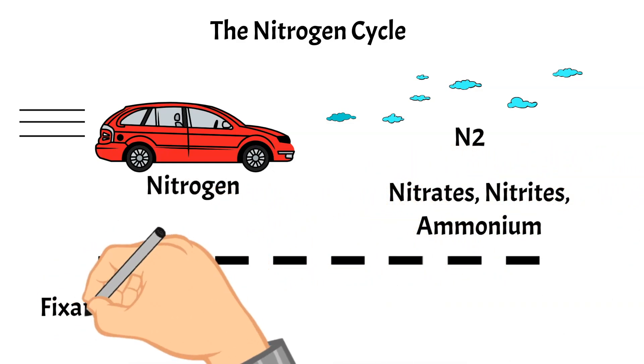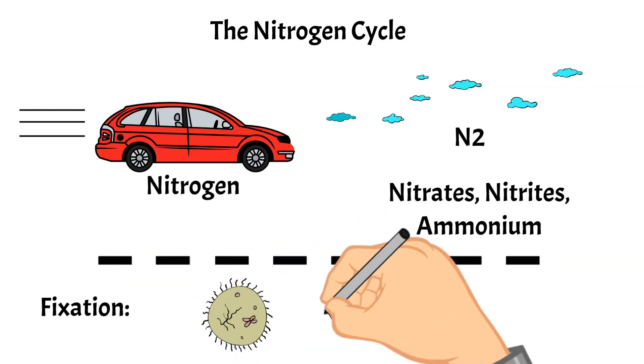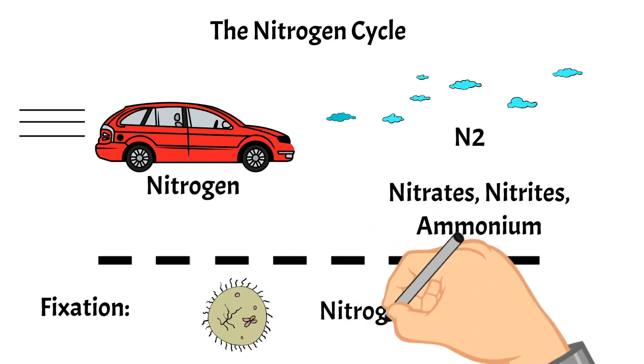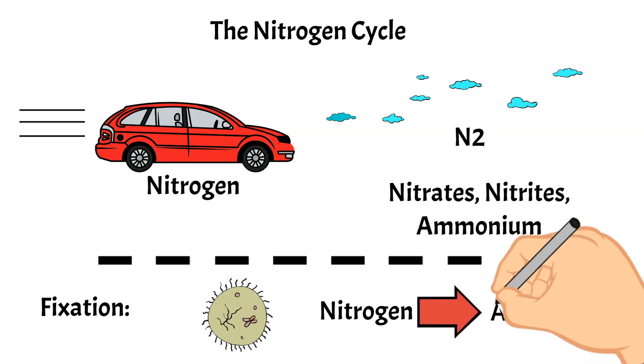So the first stop in the nitrogen cycle is fixation. Fixation is the first step in making nitrogen usable by plants. Here bacteria change nitrogen into ammonium.